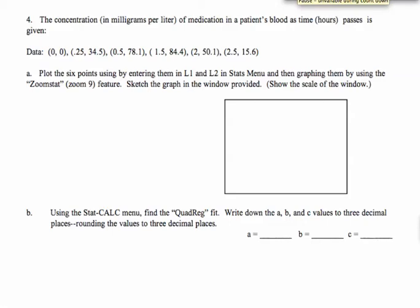Here we are doing a quadratic regression problem. This is one in which you're supposed to imagine that a patient has taken a pill and the medication slowly goes into the bloodstream, then the body processes it and the amount of medication gets lower and lower. So here's our data: at the start there's no medication, and at 0.25 of an hour — this is in hours — that's the concentration of medication in milligrams.